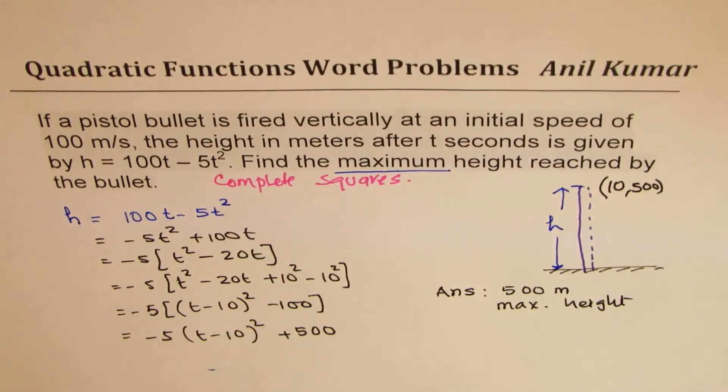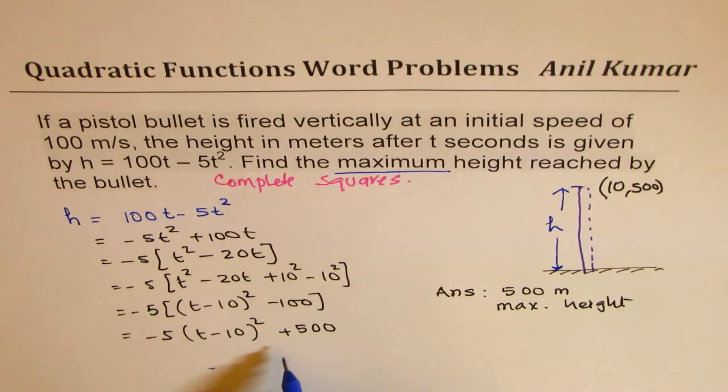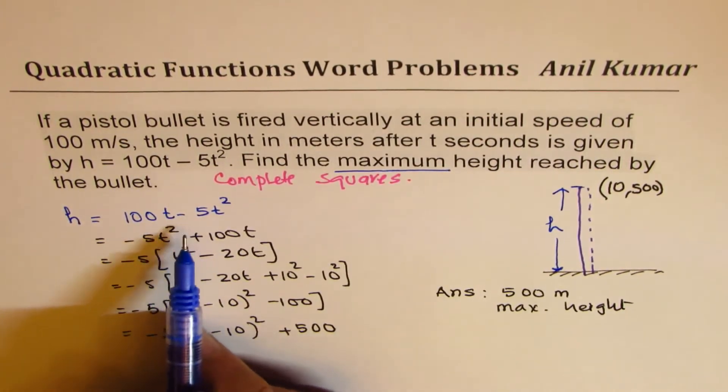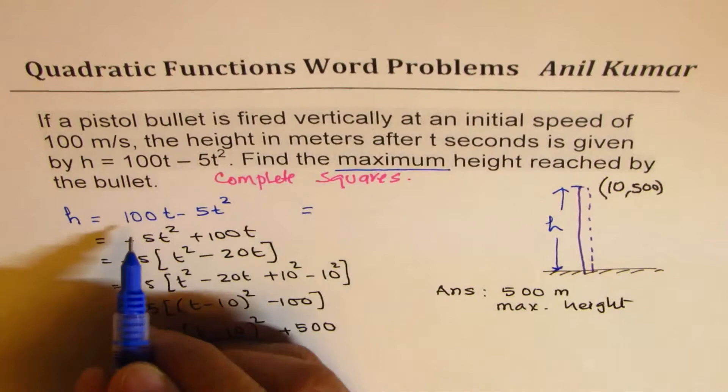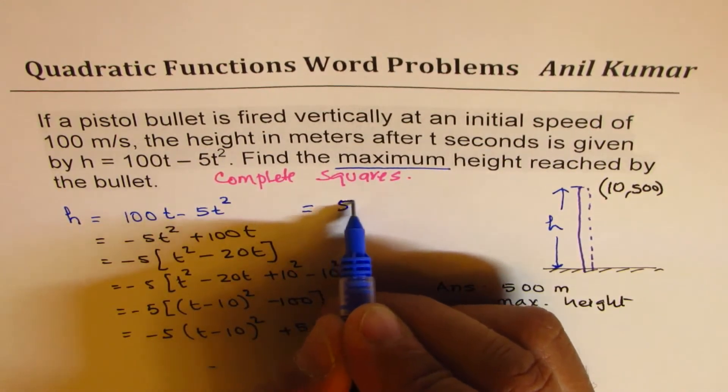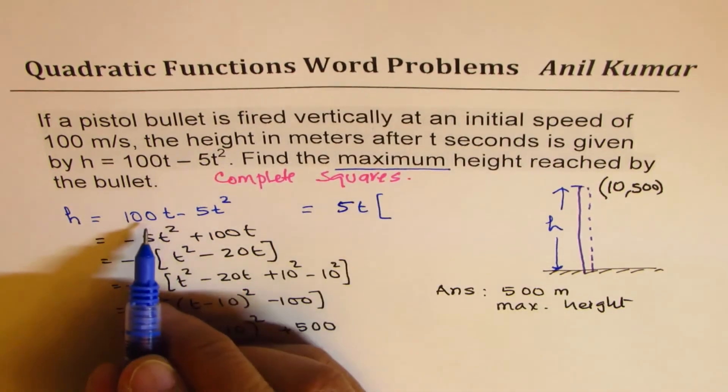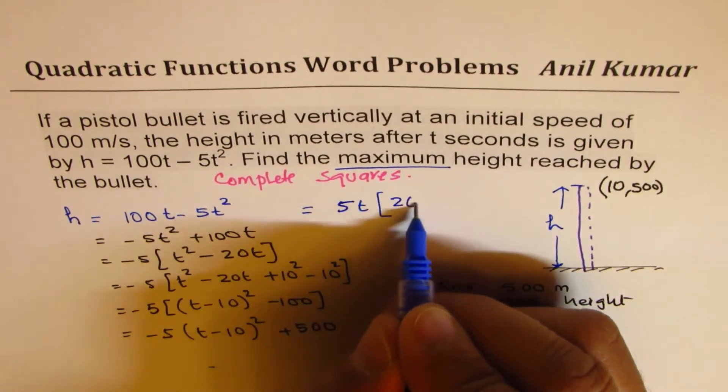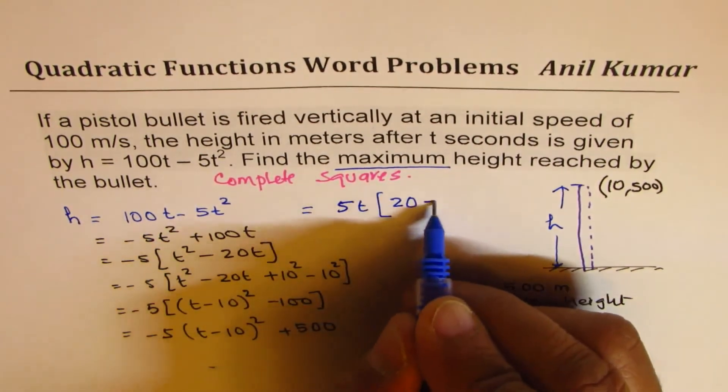Now, here is an alternate approach. You don't have to always do this. You could factor and get your answer also. So let me show you that. So if I take 5t as my factor. Then I get here 20. And here I get minus t.